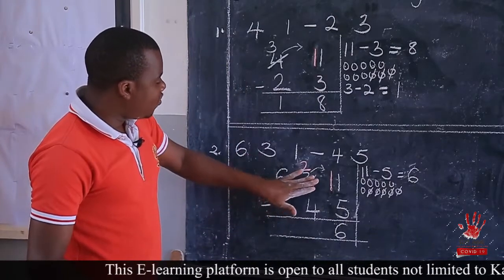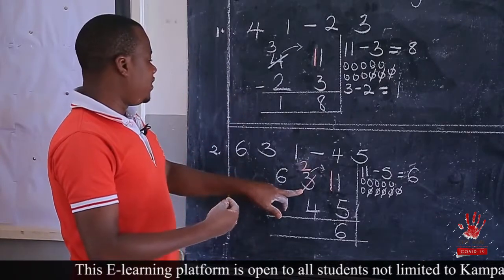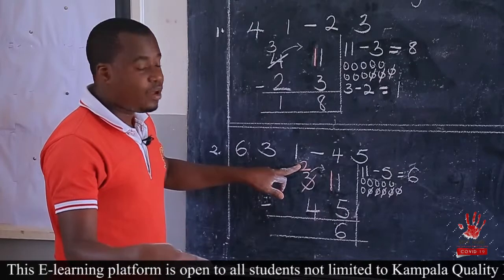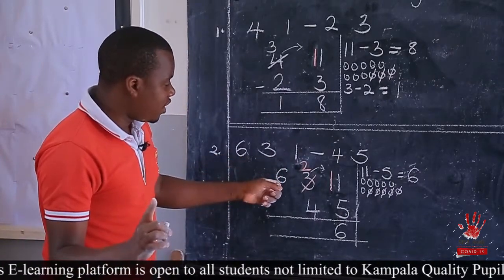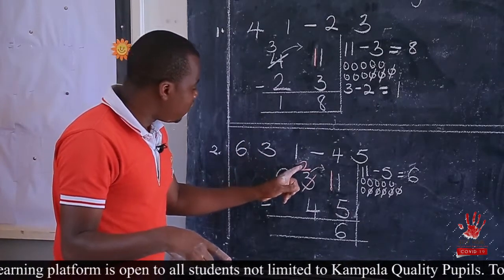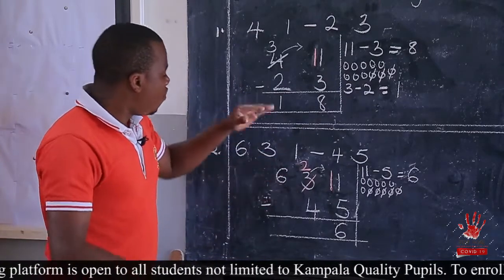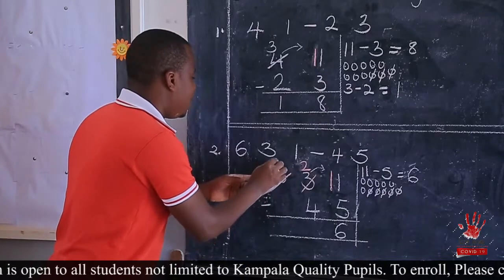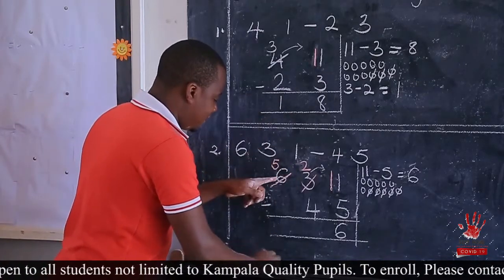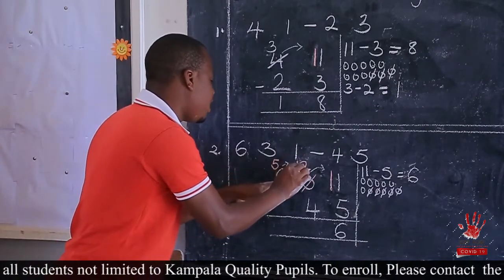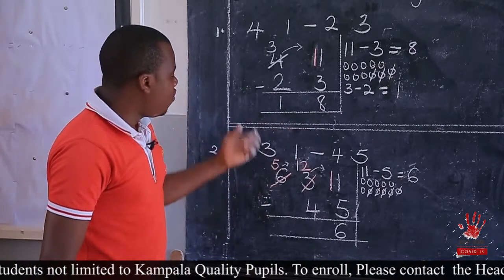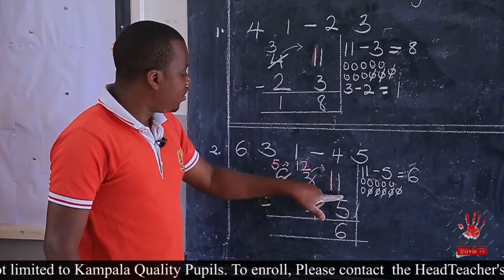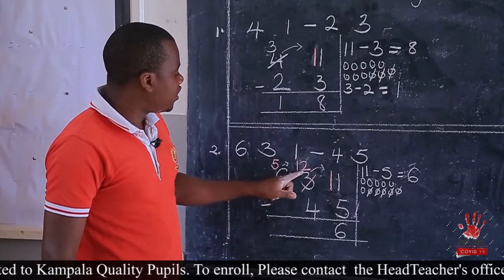Now when I regrouped the 3 in tens, it remained with 2. So this is 2. Now what is 2 take away 4? You realize 2 is small, so what shall we do? We still go to the next number. This one now becomes the ones, and the next number is tens. We shall still get one 10 from the next number. So when we regroup, we cross it out and remain with 5. We have removed one 10. So adding that one 10 to 2, we get 12. Ten plus 2 is 12.